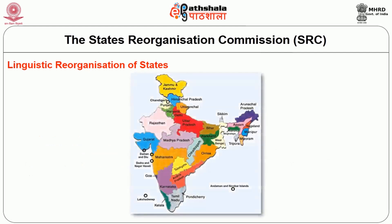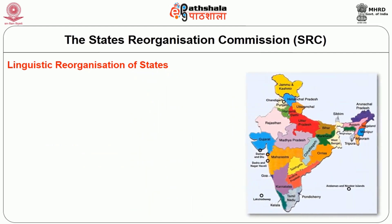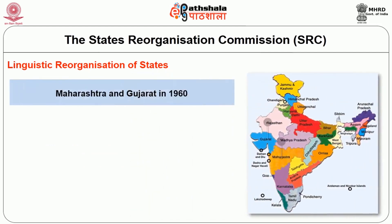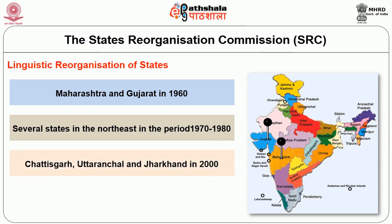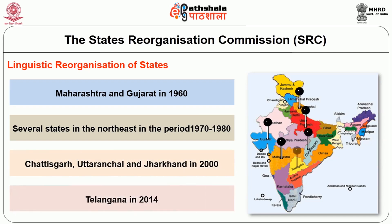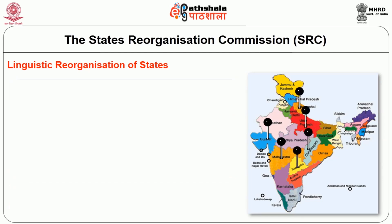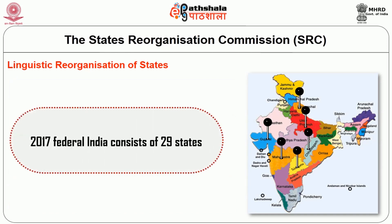The 27 states that had existed before 1956 were reorganized as 14 states after the States Reorganization Act of 1956. In the decades that followed, more states were formed, like Maharashtra and Gujarat in 1960, several states in the northeast between the 1970s and 80s, the state of Jharkhand in 2000, and the last being the state of Telangana in 2014. As it stands in the middle of 2017, Federal India consists of 29 states.